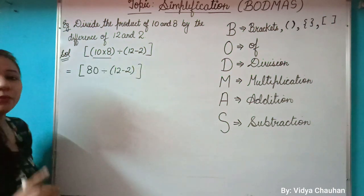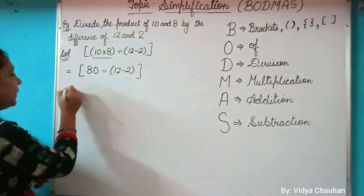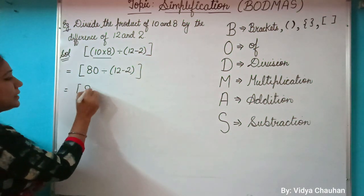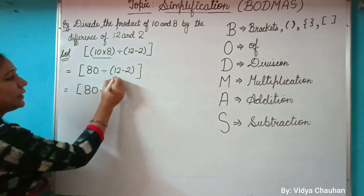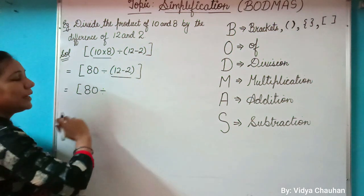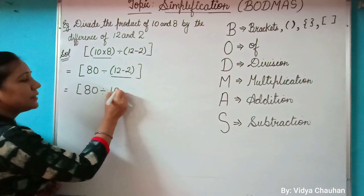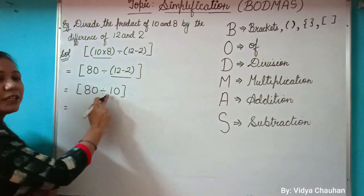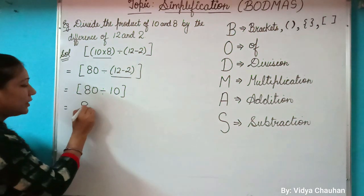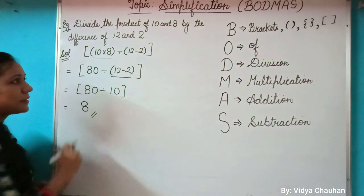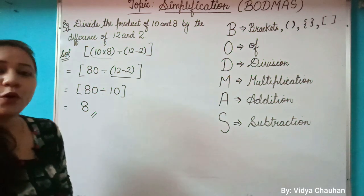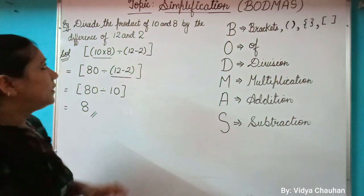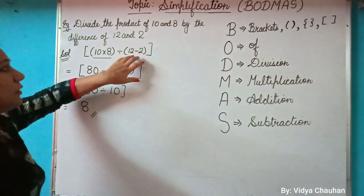In the next step, it is 80 divided by... now what is 12 minus 2? The answer is 10. Solving at the last, 80 divided by 10, and this will give you answer as 8. So this is how you can solve a word problem related to simplification by converting it into numerical format.